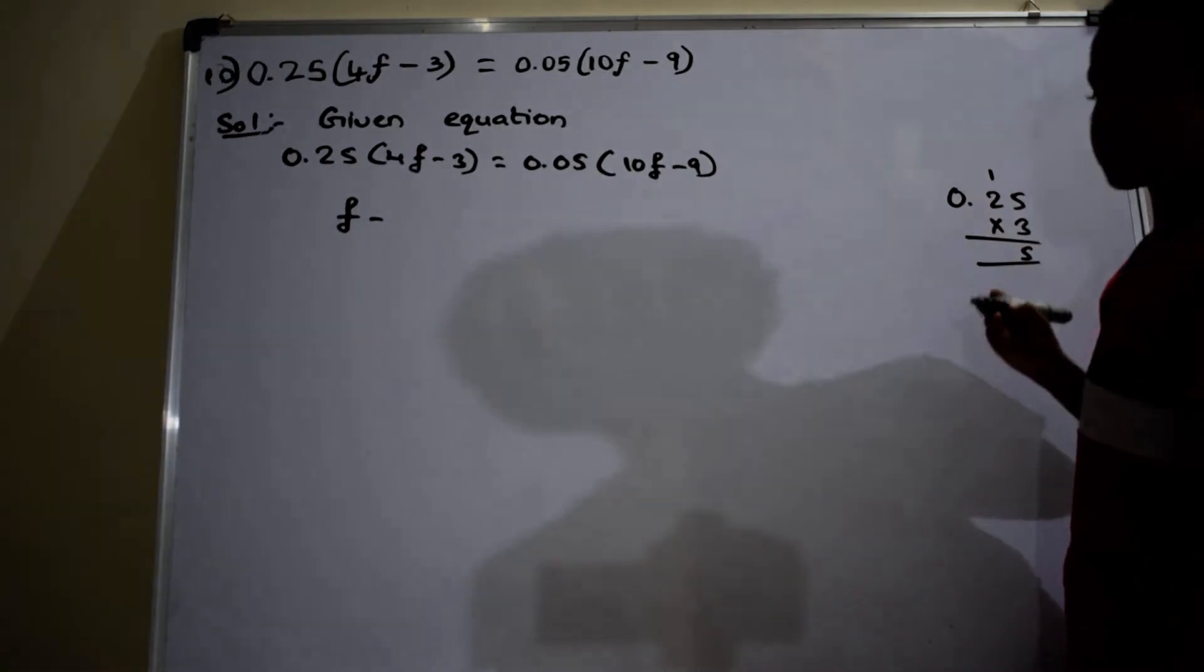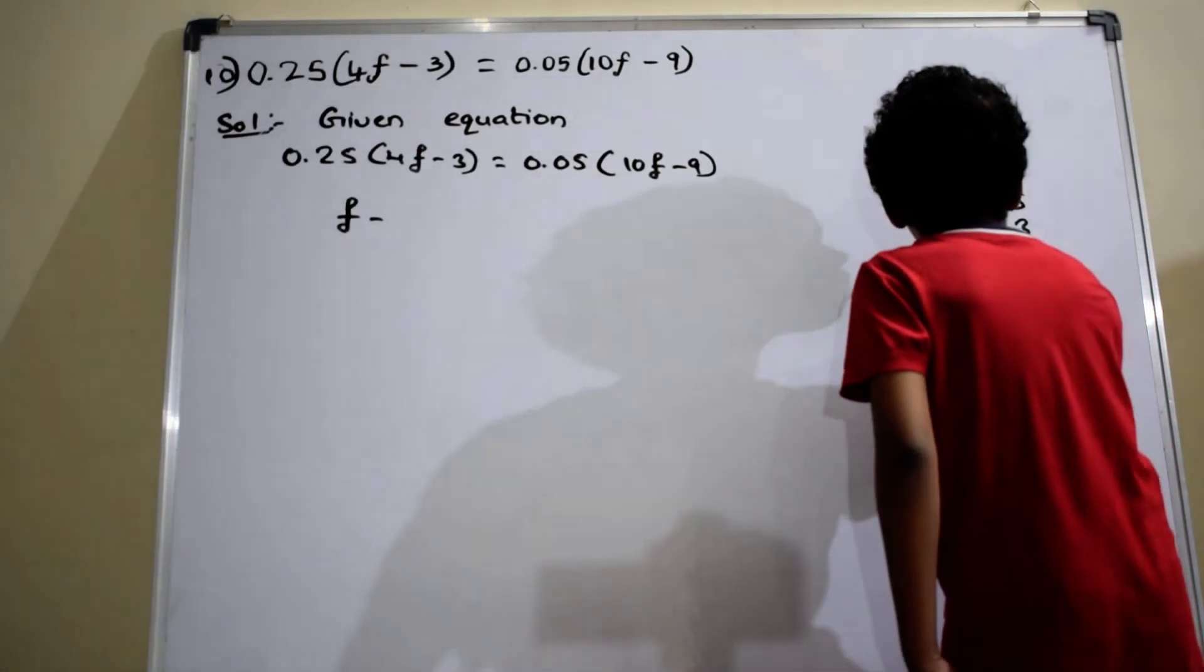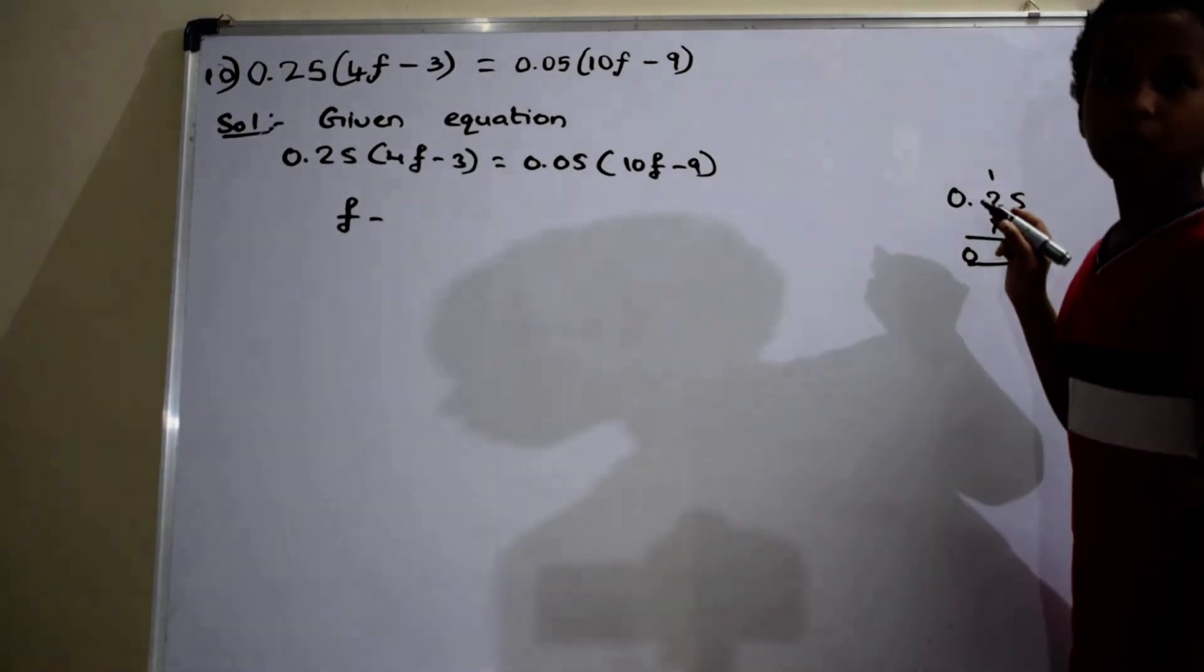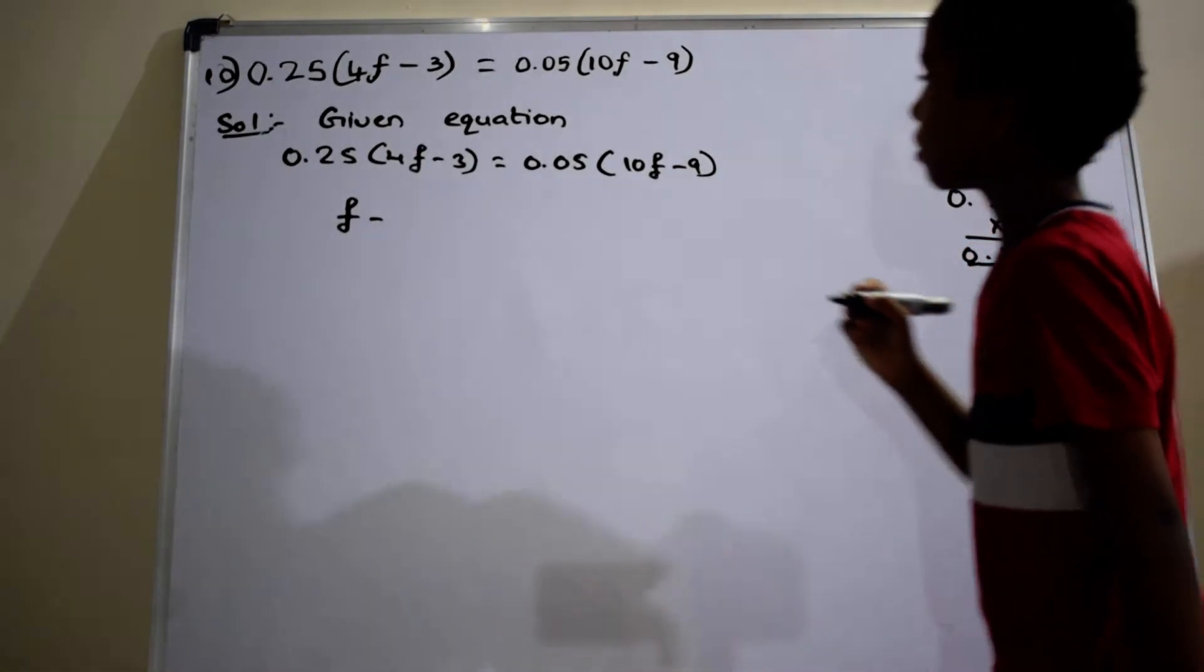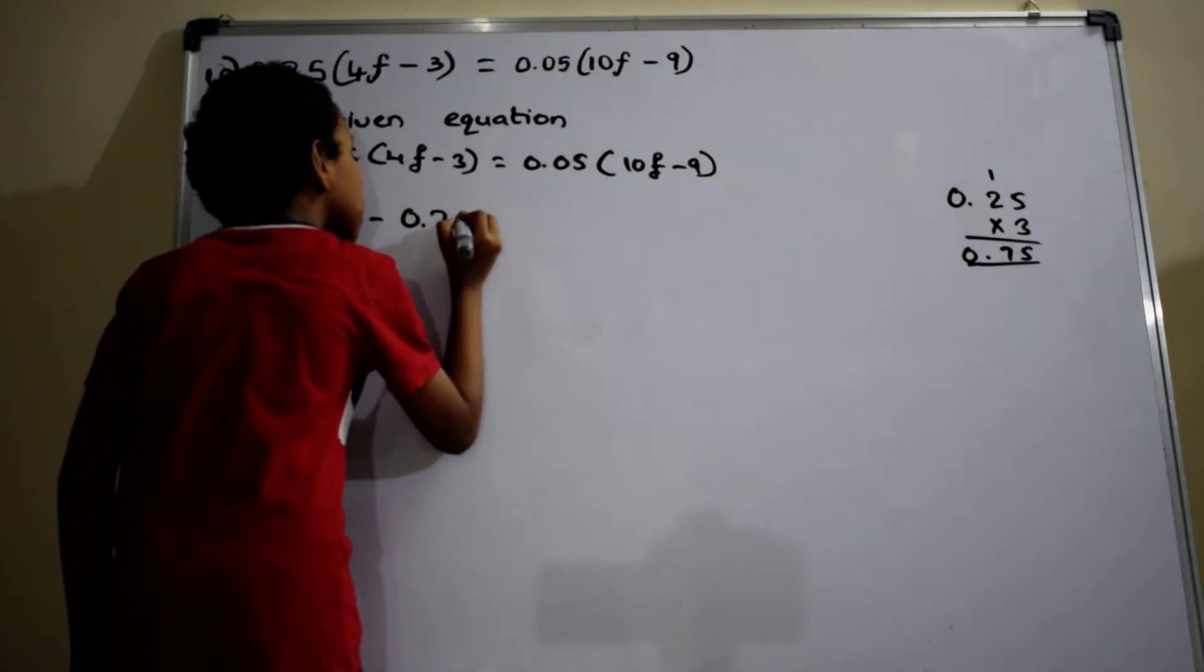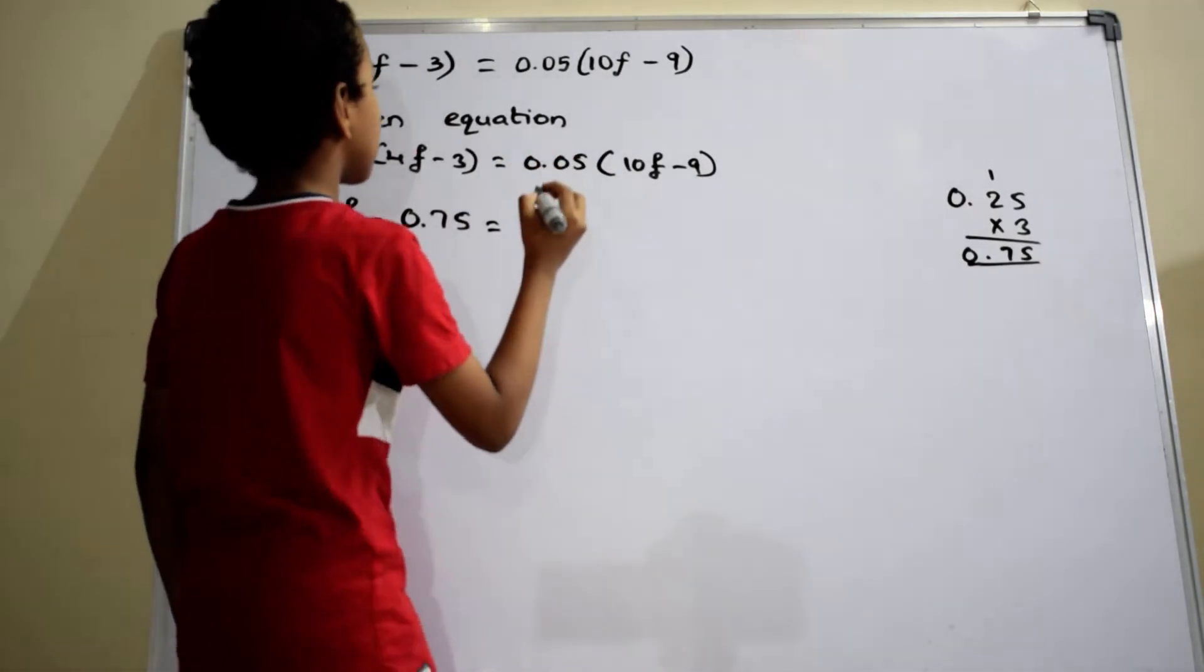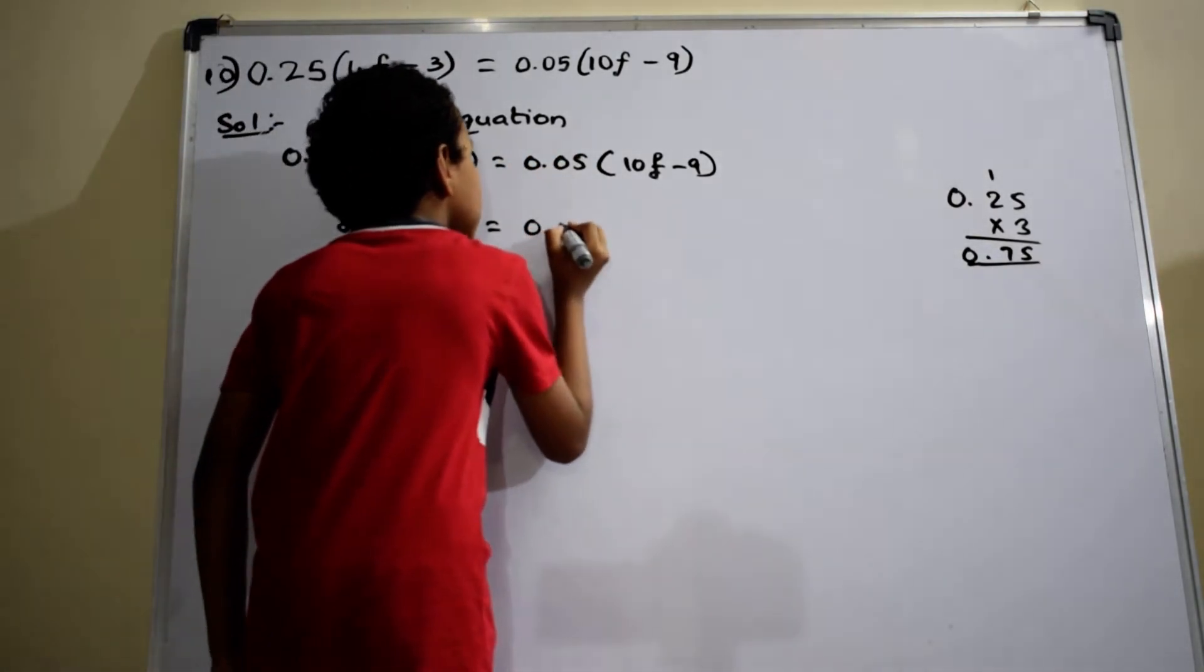10 into 2 is 6, 6 plus 1 is 7. 2 into 0 equals 0. After decimal point, there are two digits. So, put here decimal point, which is equal to f minus 0.75.